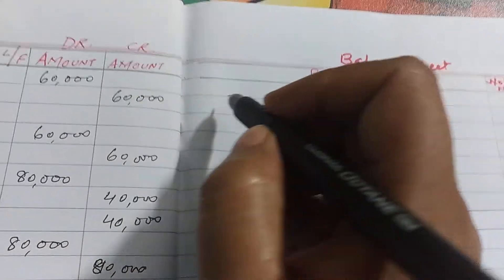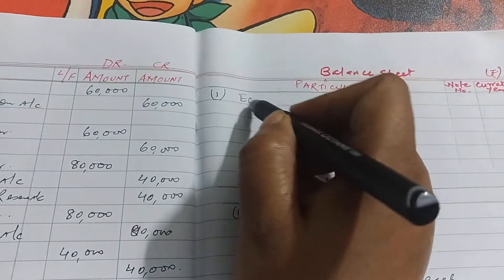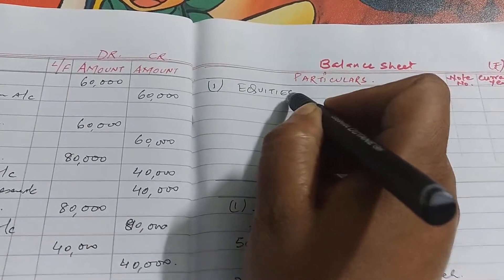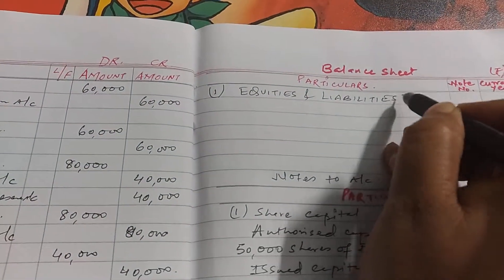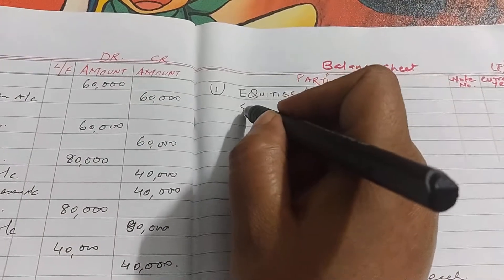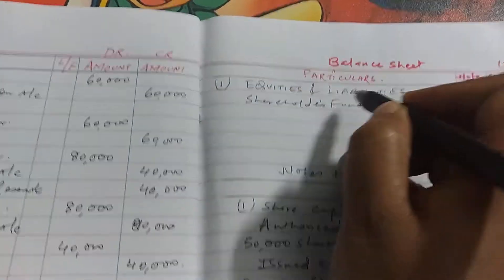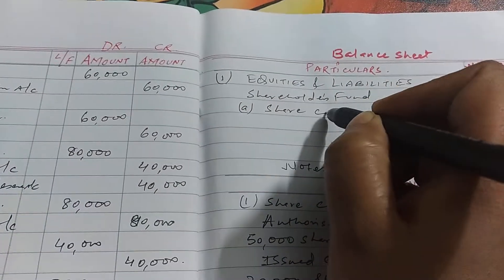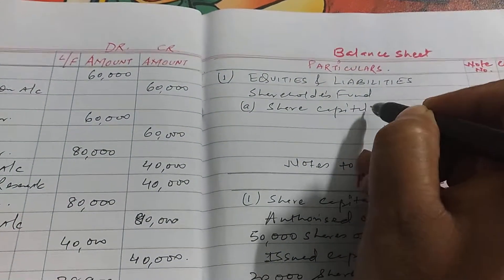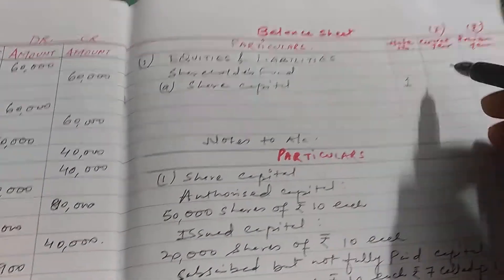So in balance sheet, first major head is equities and liabilities. Under this shareholders fund and under shareholder fund, share capital. And under the subhead of share capital, note 1, because note 1 here.